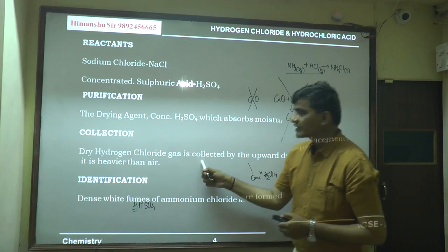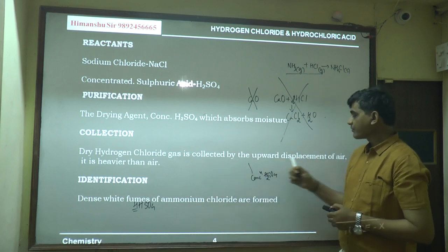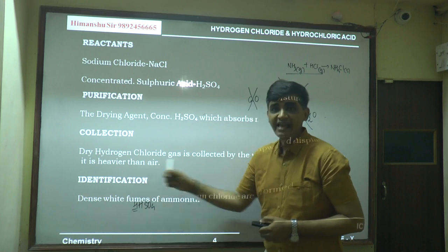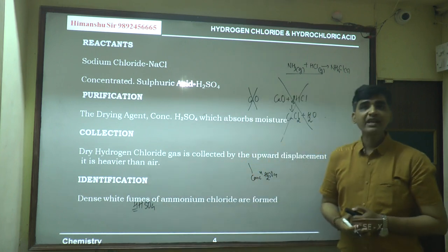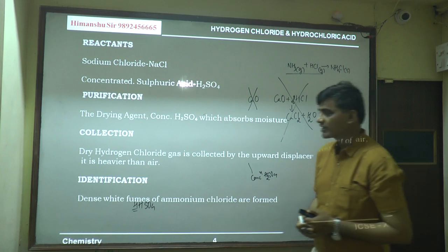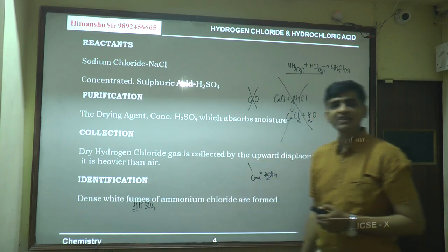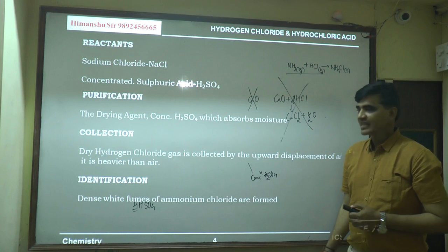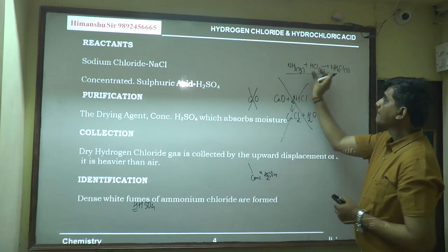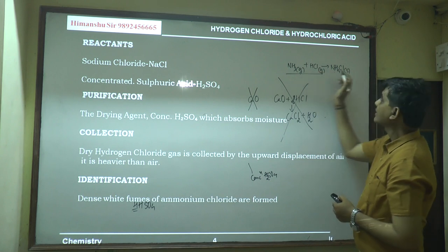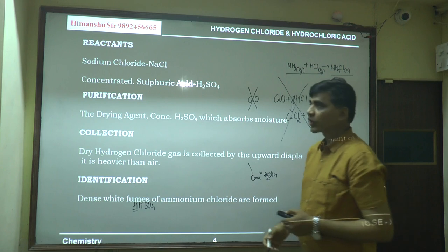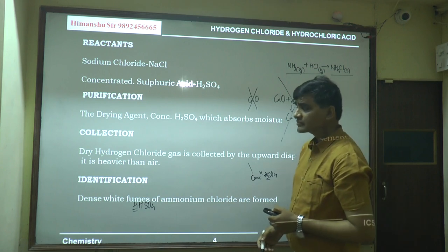The gas is collected by upward displacement of air because it is heavier than air. It cannot be collected over water because hydrogen chloride is highly soluble in water. To identify that the given gas is HCl, take a glass rod dipped in ammonia and bring it near the gas jar — you will get dense white fumes of ammonium chloride, which is a solid.